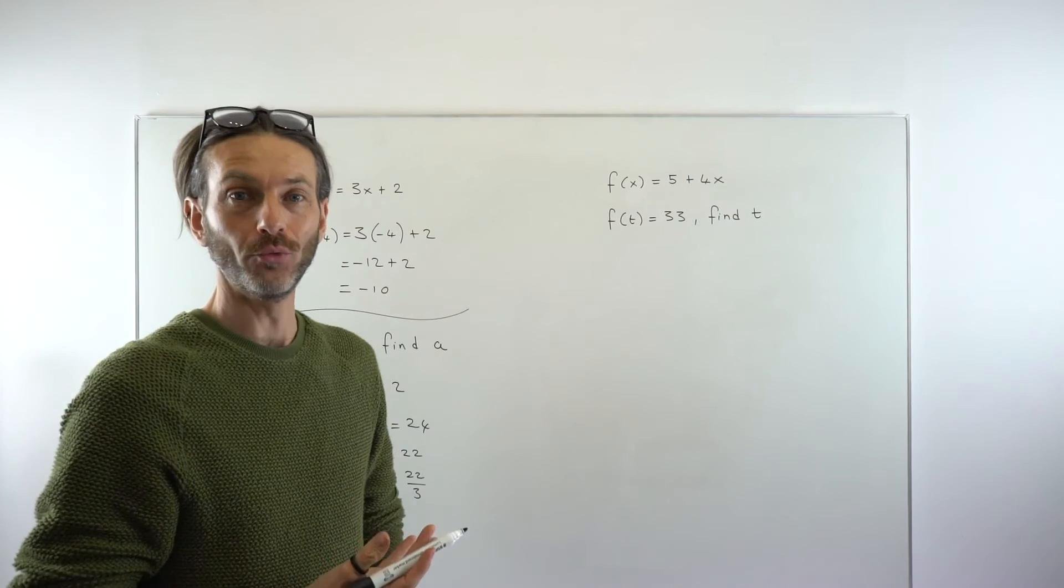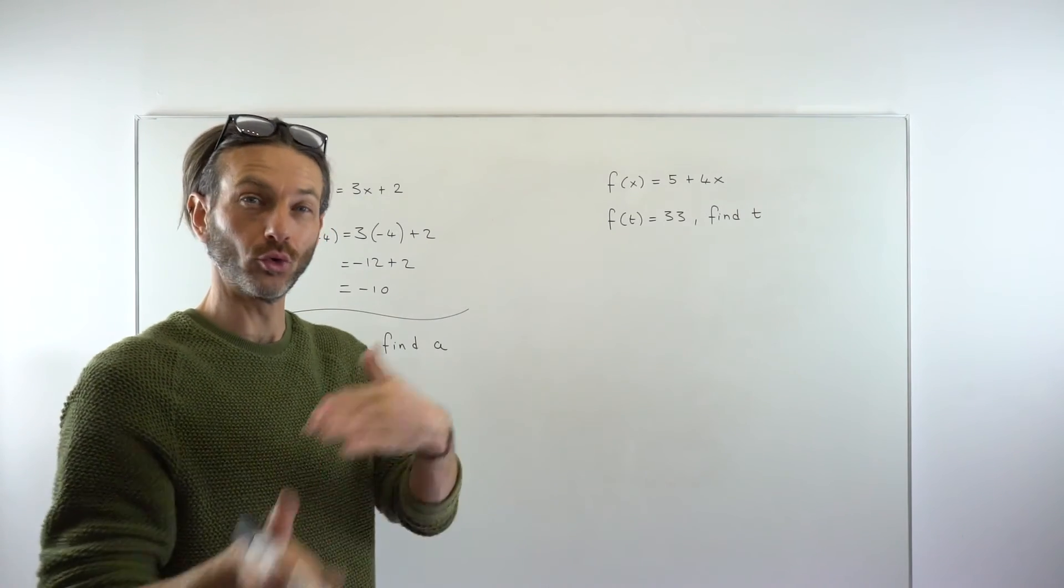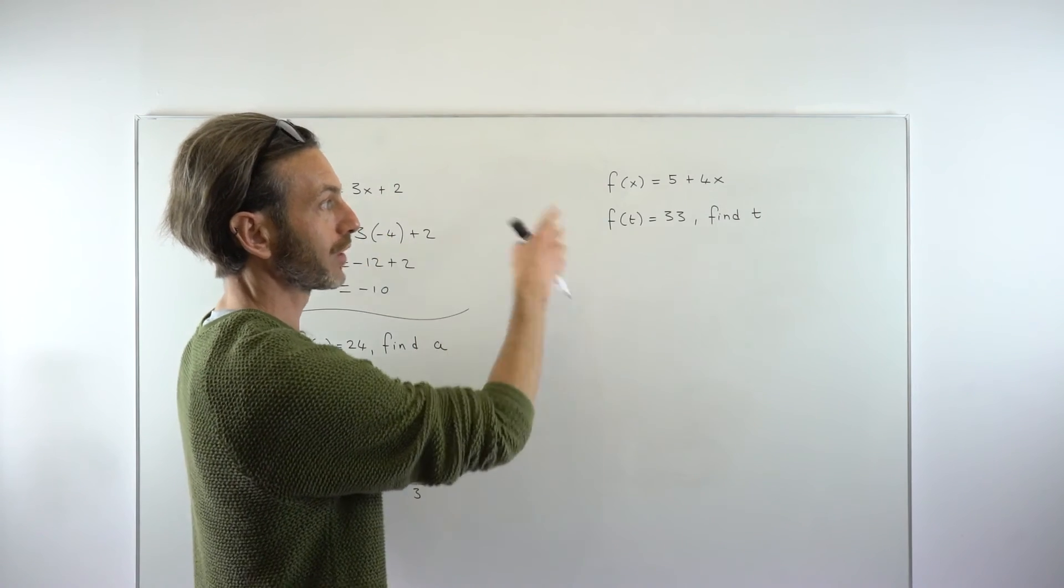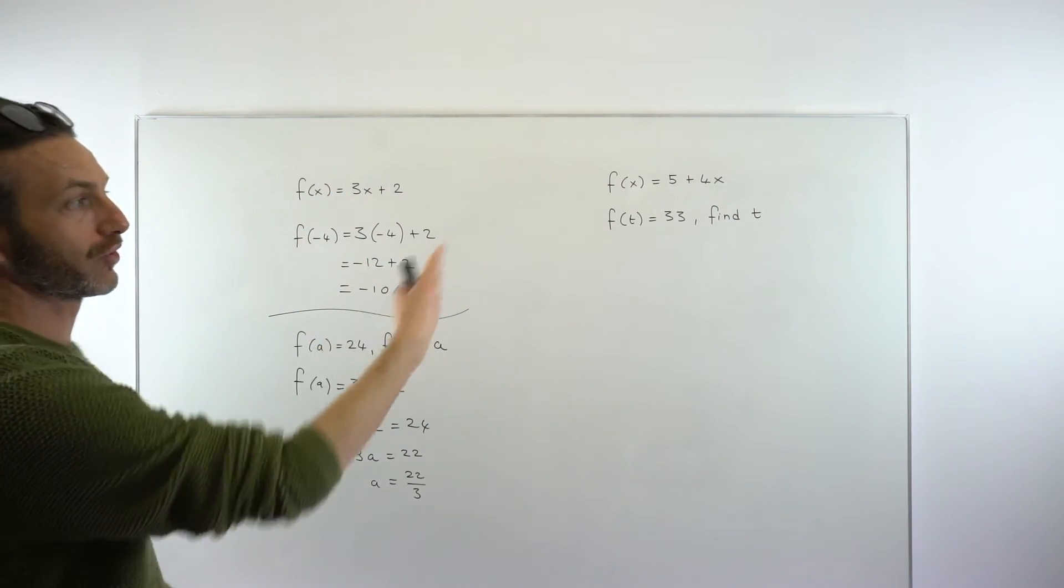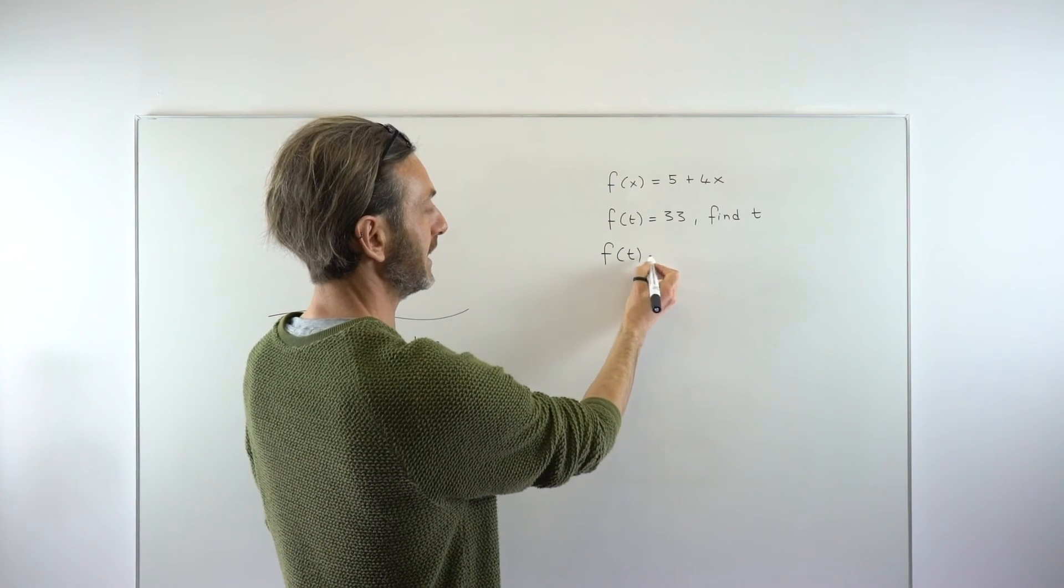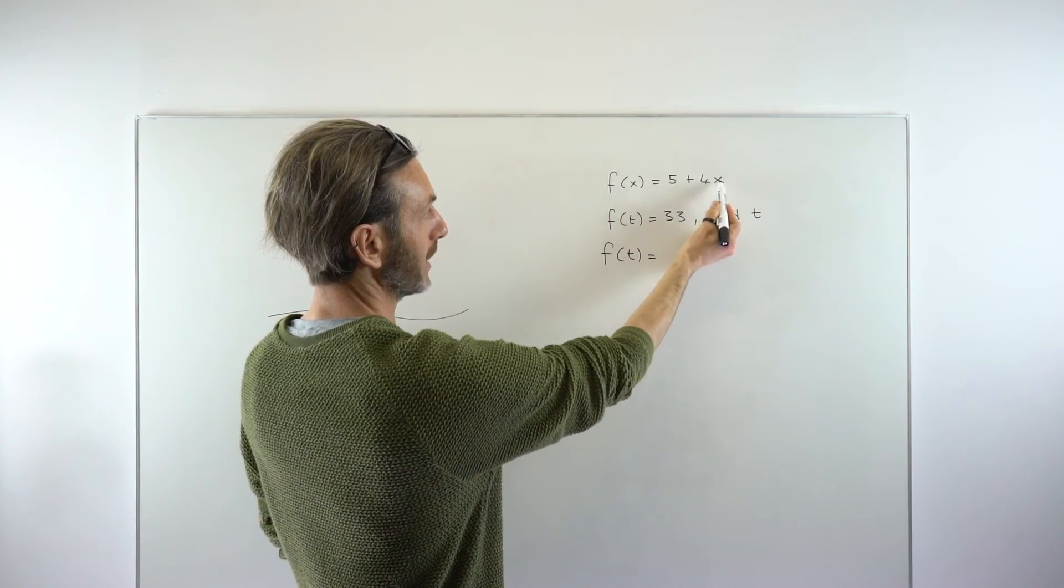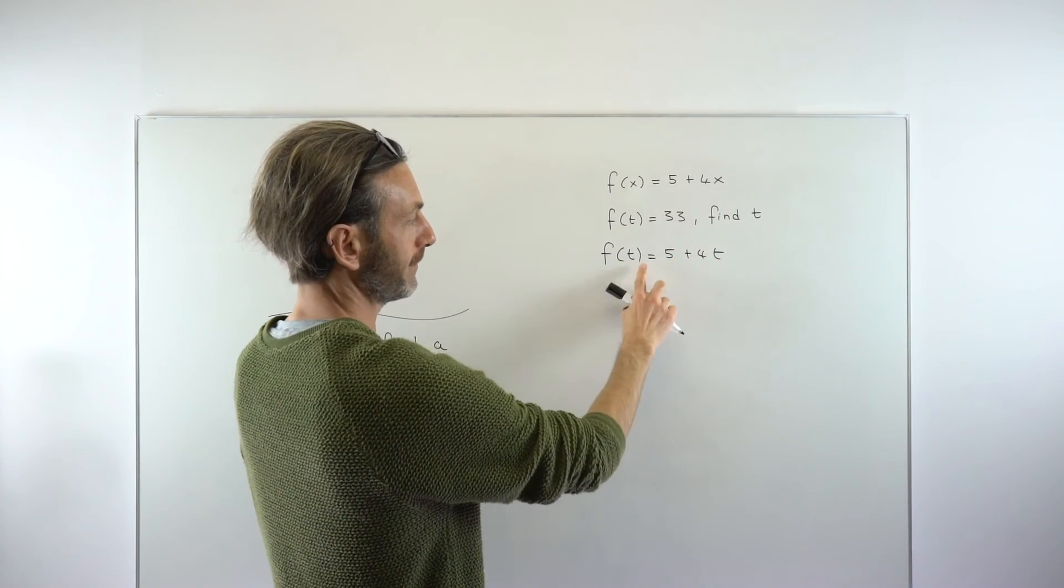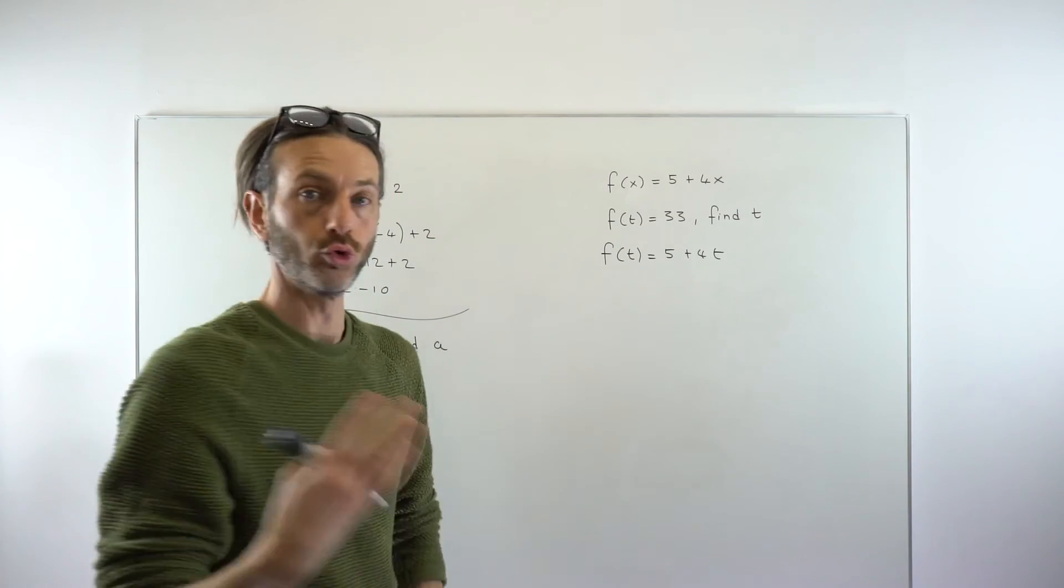So essentially, in these more difficult versions with function questions, you're working the question backwards. Let's take a look at this one. There's no part A, there's no evaluating this one. It's just straight into the more difficult part. So again, we could say if we evaluated f of t, that would literally be replacing the x with t. So 5 plus 4t. f of t is 5 plus 4t algebraically.